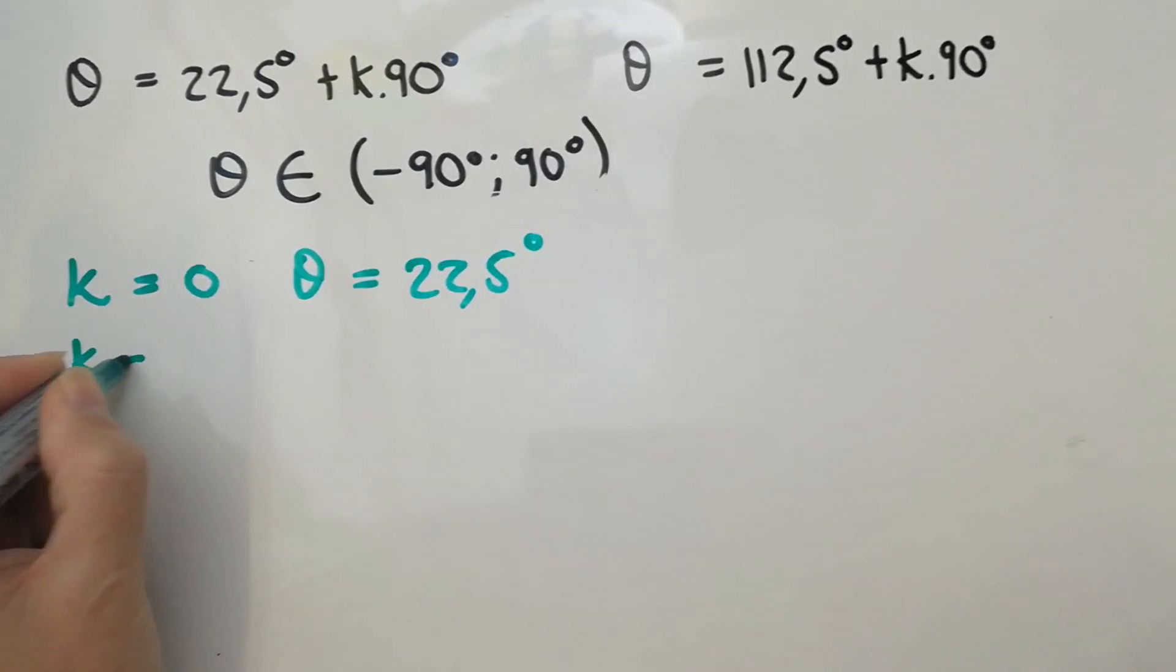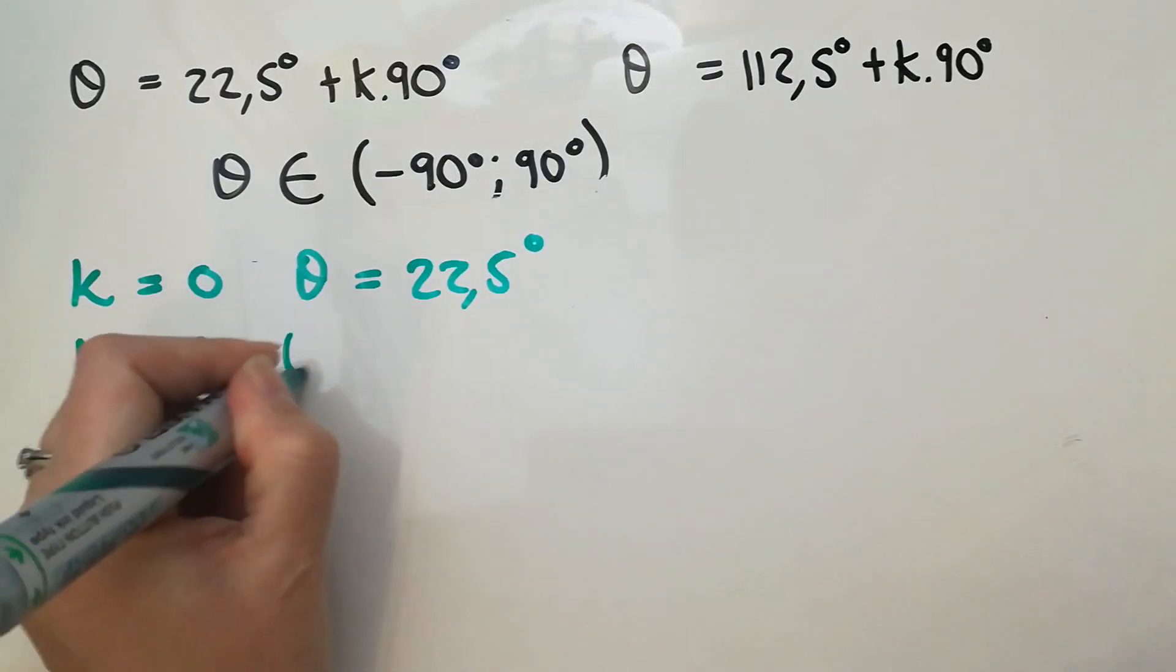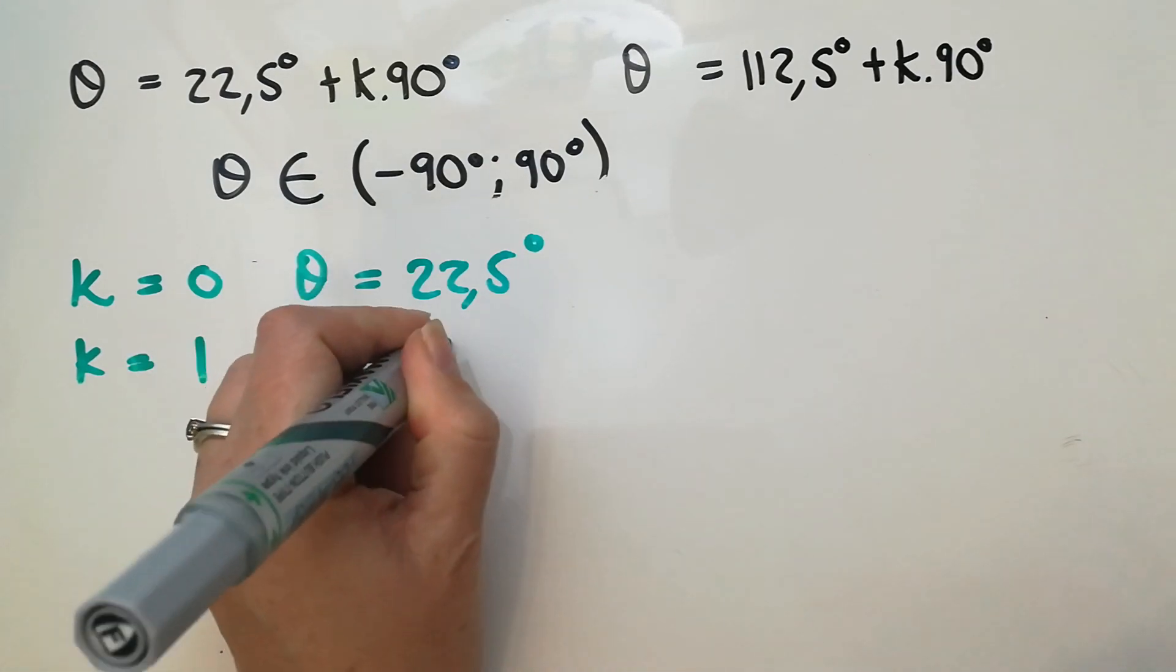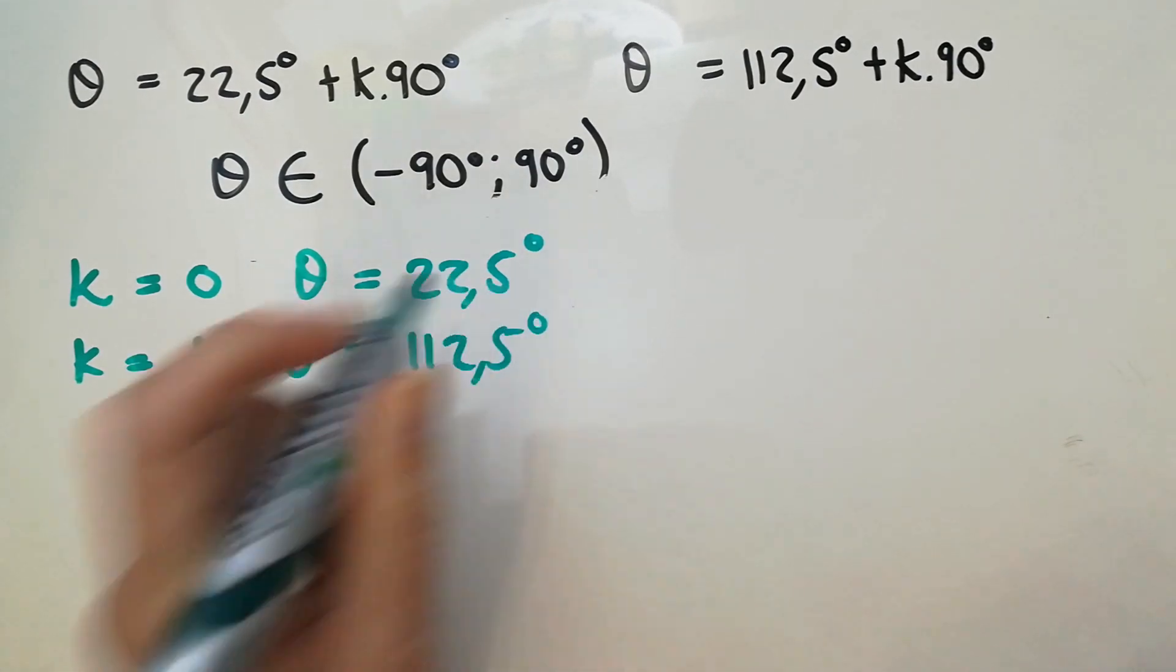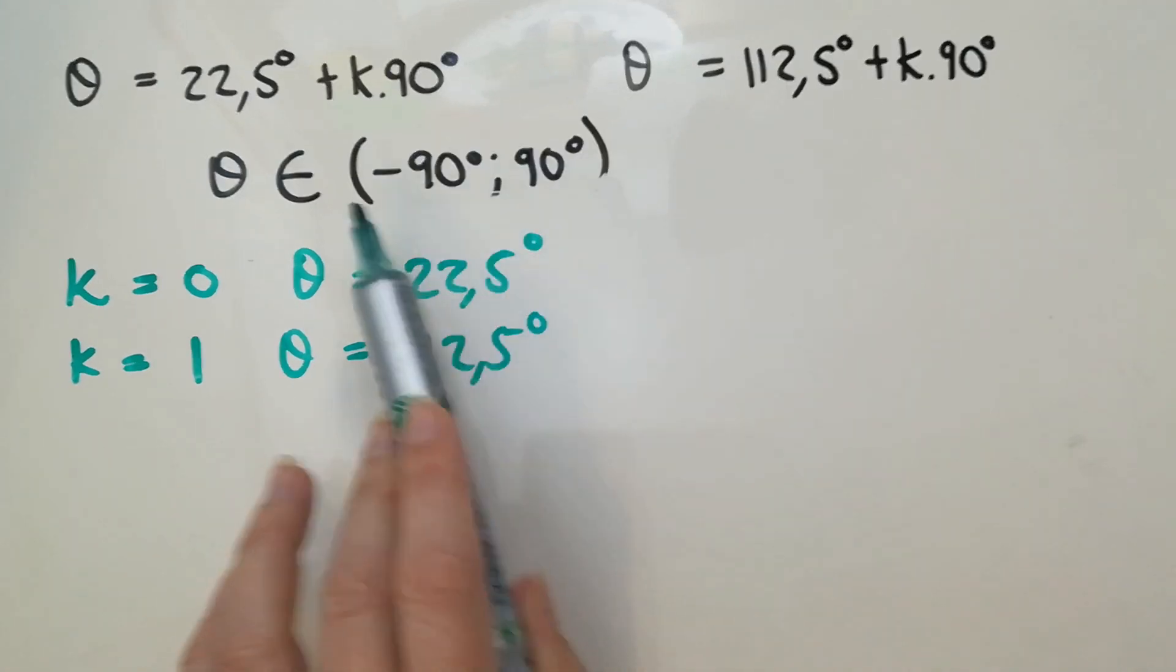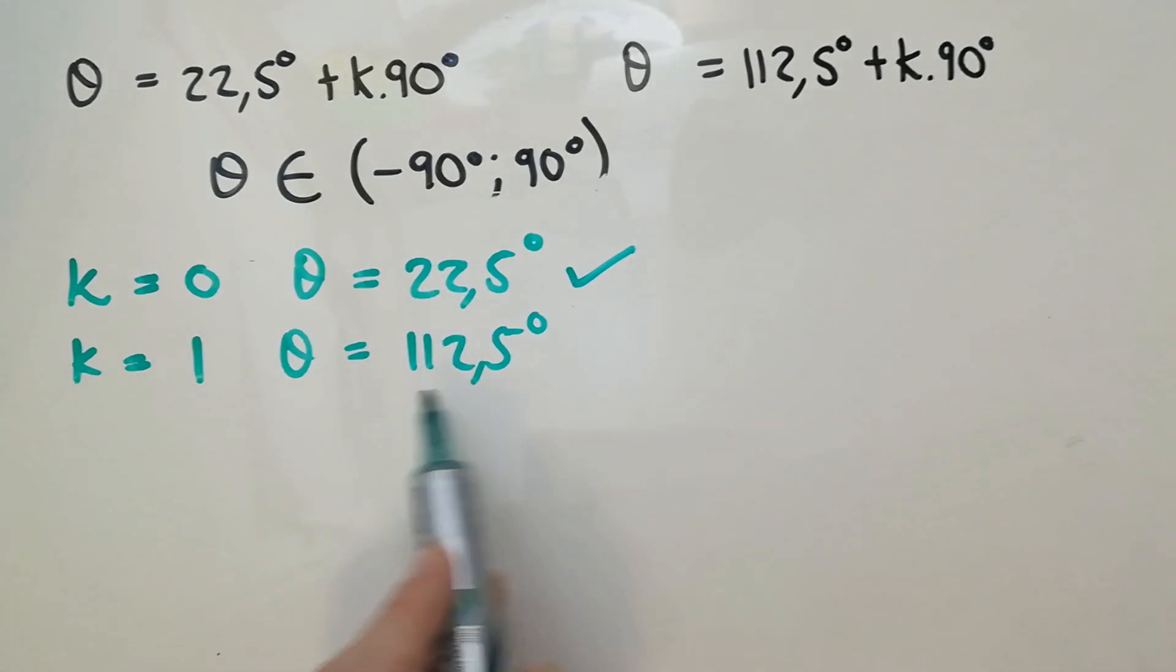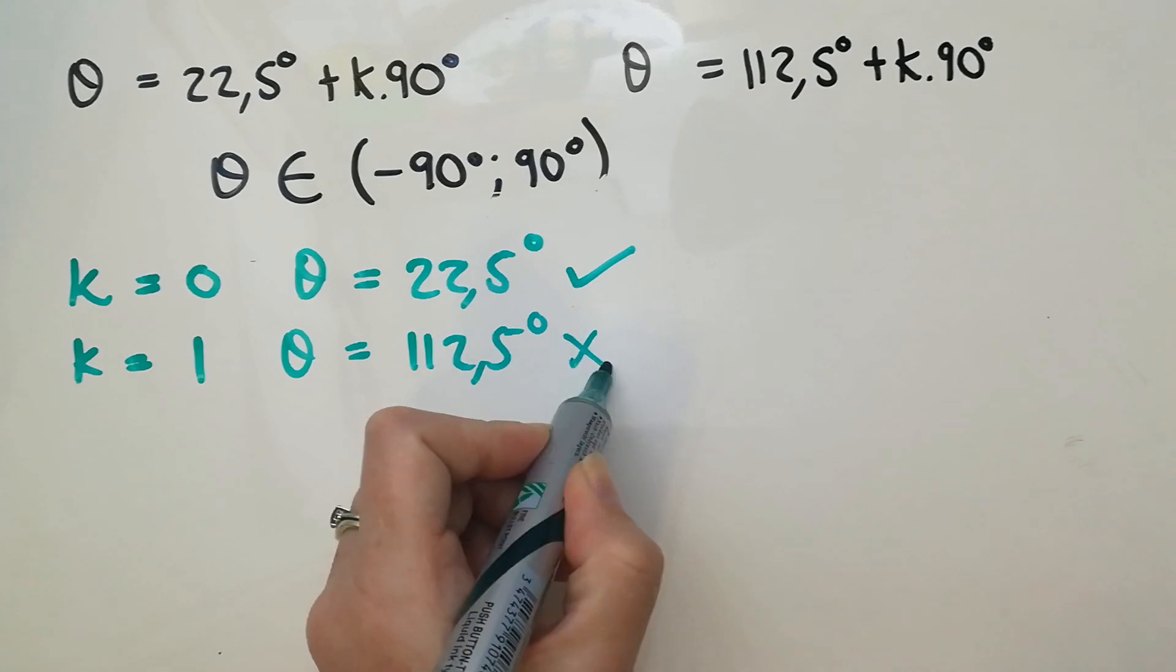If k equals one, then I'm adding 90. That got me there, remember. So I now have 112.5. Let's have a look there. Does that fit into this boundary? So k can be zero and I can have that answer. If k is one, I have this, which is bigger than 90, so that one's not going to work.